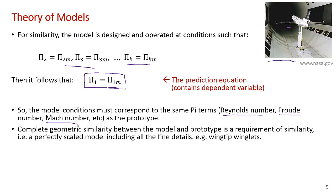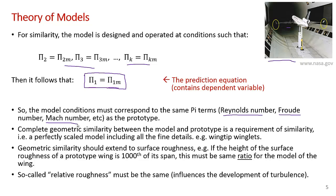The pi terms include geometric effects as well, such as aspect ratios. So in order to satisfy all the pi terms, you have to have complete geometric similarity between the model and the prototype — it has to be a perfectly scaled model, including all the fine details. For example, winglets on an aircraft used to reduce the drag effects of wingtip vortices would have to be exact scale. Geometric similarity should also extend to surface roughness. If the height of the surface roughness on the full-scale wing is, say, 1/100th or 1/1000th of the span, it must be that same ratio on the model wing as well — the same relative roughness — because surface roughness influences the development of turbulence.